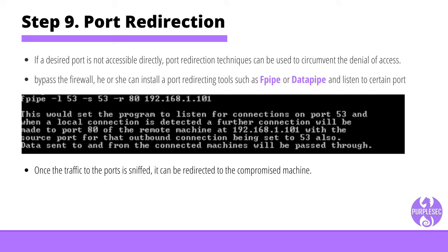Step nine: port redirection. Testing for port redirection is an important step that can allow further compromise of a given network. If a desired port is not accessible directly, port redirection techniques can be used to circumvent the denial of access. If the tester manages to compromise a target system and wants to bypass the firewall, a port redirecting tool such as FPipe or Datapipe can be installed to listen on certain port numbers. Once traffic to those ports is sniffed, it can be redirected to the compromised machine.